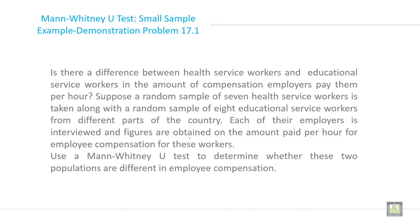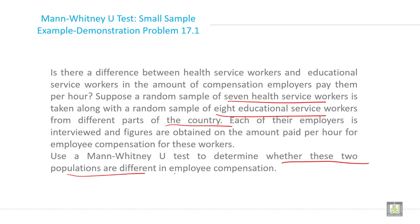For example, is there a difference between health service workers and educational service workers in the amount of compensation employers pay them per hour? Suppose a random sample of seven health service workers is taken along with a random sample of eight educational service workers from different parts of the country. Each of their employers is interviewed and figures are obtained on the amount paid per hour for employee compensation. Use a Mann-Whitney U test to determine whether these two populations are different in employee compensation or not.